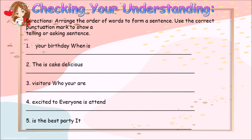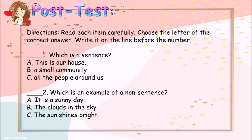For our next activity, arrange the order of words to form a sentence. Use the correct punctuation mark to show a telling or asking sentence. 1. Your birthday when is. 2. That is cake delicious. 3. Visitors who your are. 4. Excited to everyone is attend. 5. Is the best party it.